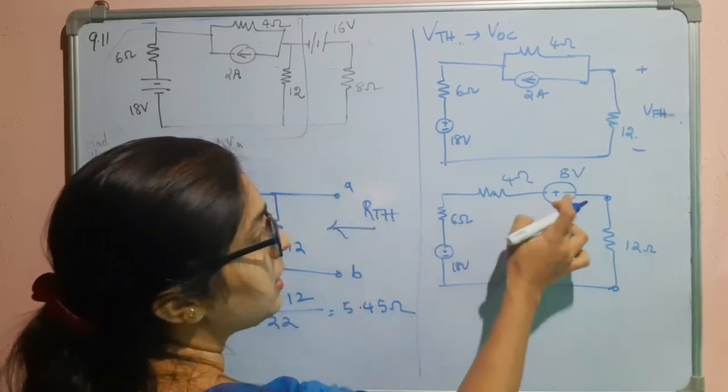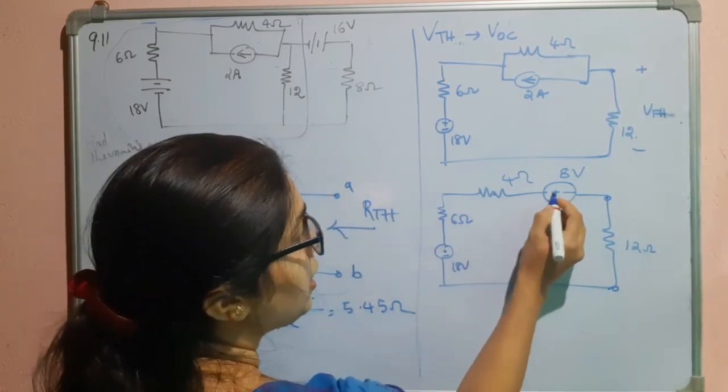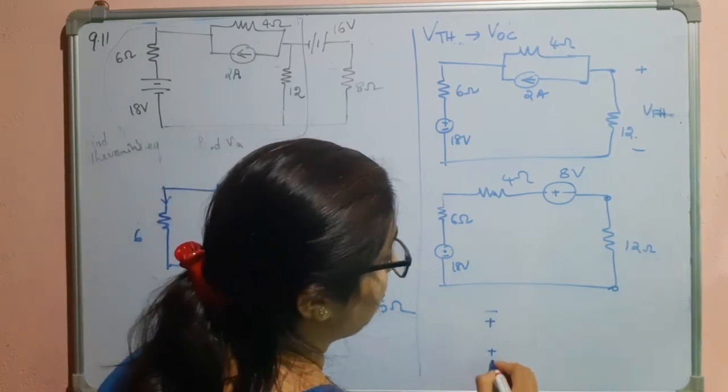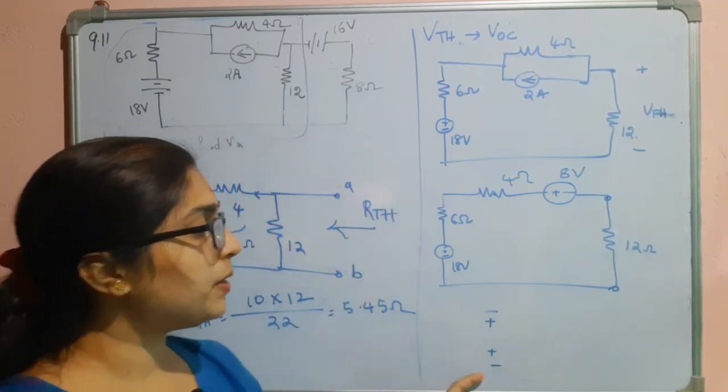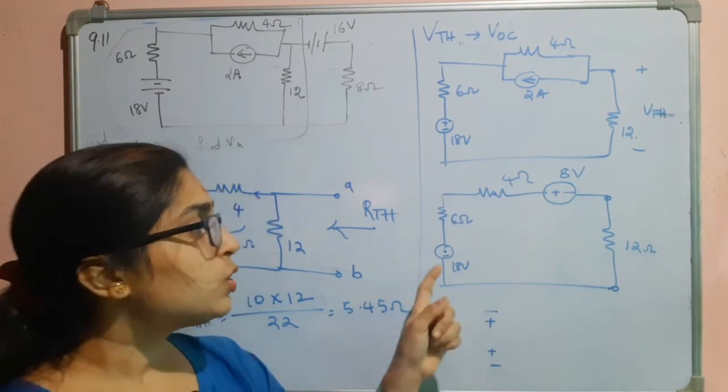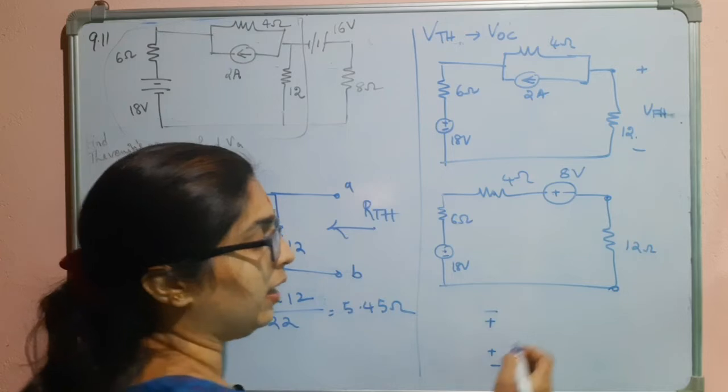We will simplify this. See, this is nothing but minus plus then plus minus. That means, we have something like this. So, in this case, what happens? We have to subtract. We have to take the difference of these two. So, 18 and 8, the difference will be 10.